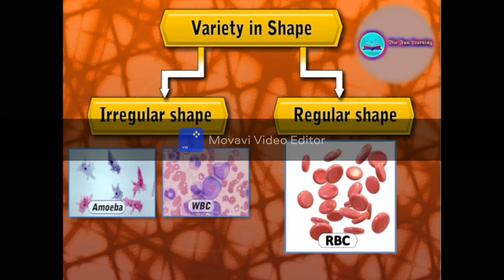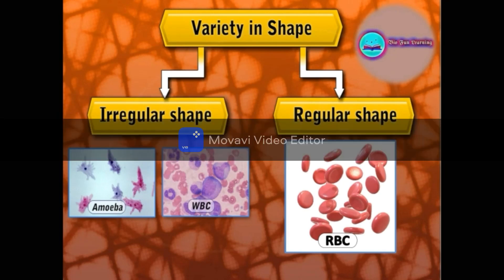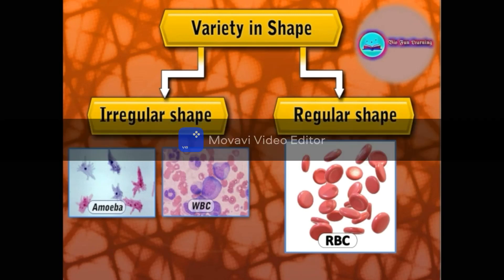Cells can be of any shape — spindle, flat, oval, disc-like, round, cylindrical, elongated, or any other irregular shape. Cells with irregular shape can change their shape at any time. For example, amoeba and WBCs. Amoeba keeps on changing its shape because of pseudopodia — 'pseudo' means false and 'podia' means feet. These projections facilitate movement and help in capturing food, which is why the shape of amoeba keeps changing.